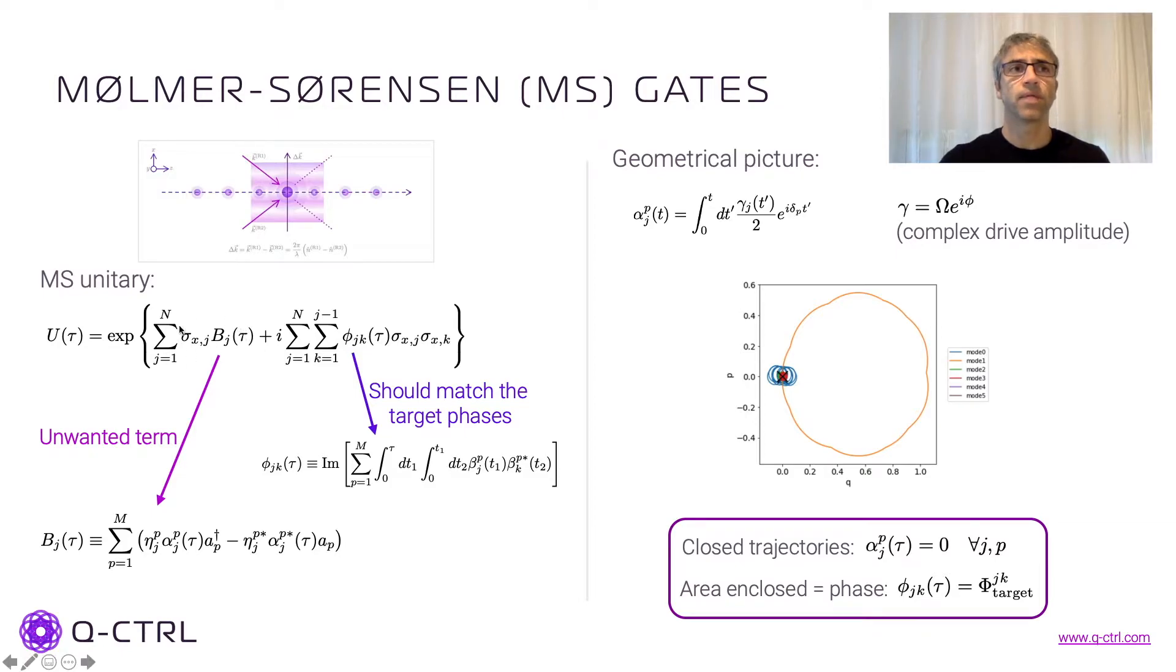So the left term has the Pauli operator for the qubits but also this term b_j which has the creation and annihilation operators of the motional modes. So this is exactly the term that we don't want because it contains entanglement between our qubit levels and the motional modes. So we want this term to be zero and this term to be the correct gate that we want.